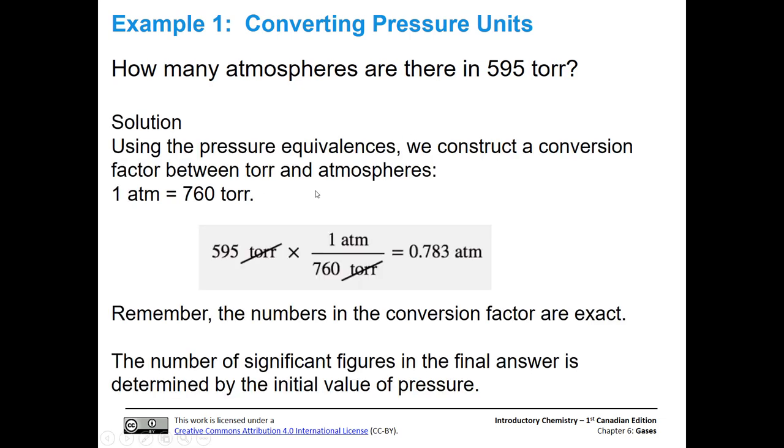Okay, so we're going to construct a conversion factor between torr and atmospheres for this problem. That's one atmosphere equals 760 torr. We're starting with 595 torr, so that means in our conversion factor, we need to have torr on the bottom so those units cancel out. 760 torr is on the bottom, and the unit we want, atmospheres, is on the top of our conversion factor.